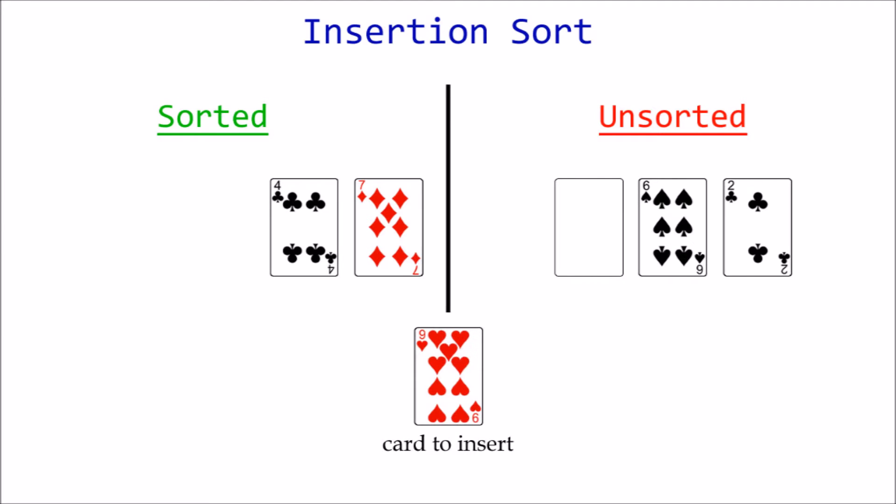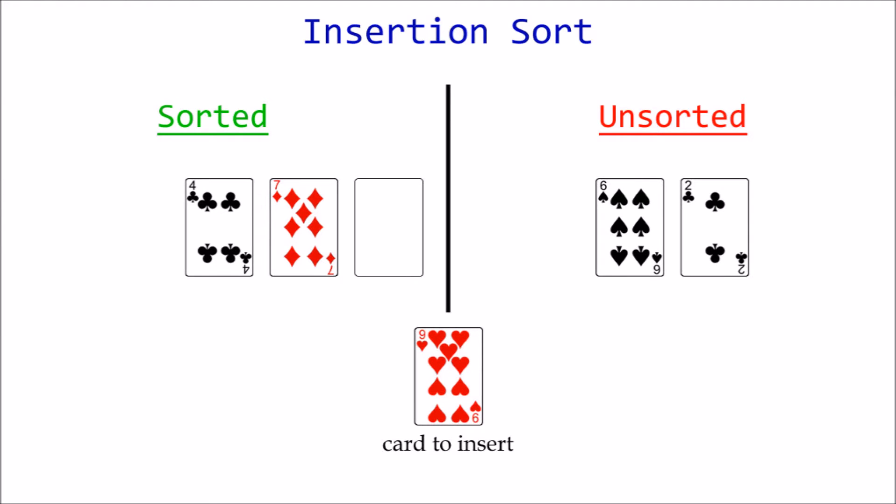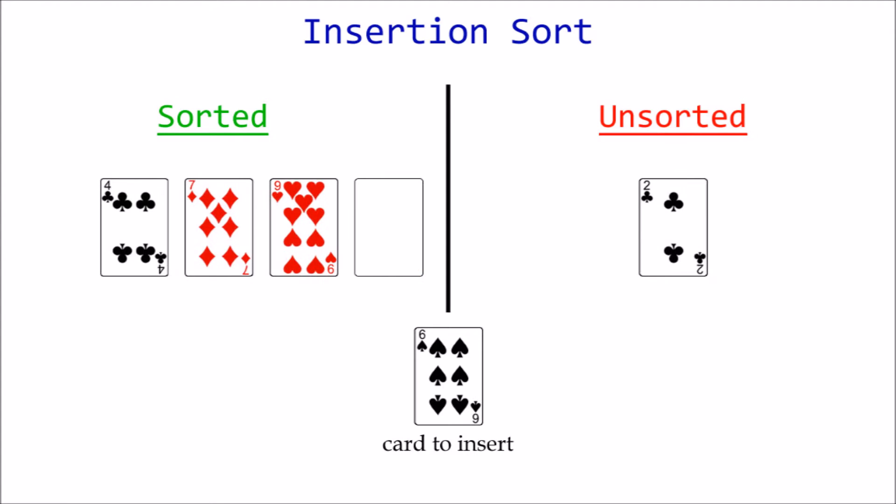Next up is 9. 9 is greater than 7, so we have already found the location of our next insertion. 6 becomes the next card to insert. 6 is less than 9 and 7, but not less than 4, which means we insert 6 between 4 and 7.